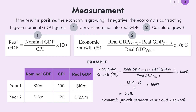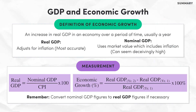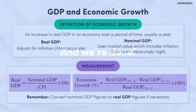And there you have it. Let's run through the key points we learned today. Economic growth is defined as an increase in real GDP within an economy over a period of time, most commonly a year. Looking at changes in real GDP provides the most accurate indication of changes in production within an economy, as it removes the effect of inflation, whereas nominal GDP doesn't make this adjustment. When asked to calculate the rate of economic growth, just remember to be careful with your calculations and, importantly, to convert your nominal GDP figures to real GDP if necessary. Thanks for watching.